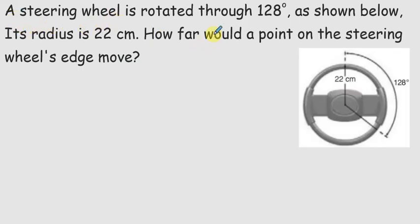A steering wheel is rotated through 128 degrees. So the angle we have is 128 degrees. As shown below, its radius is 22 centimeters. So the radius equals 22 centimeters, or we can convert it into meters by dividing 22 by 100, equals 0.22 meters.